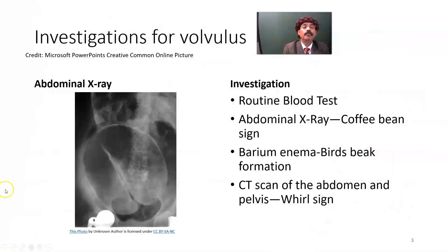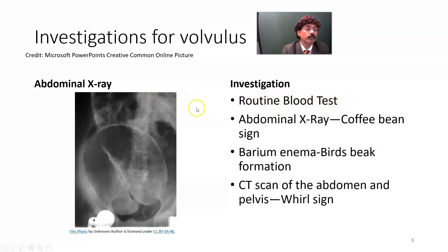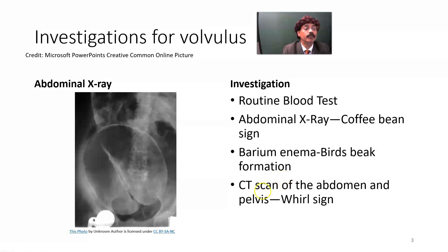What are the investigations for volvulus? Typically we do blood tests, including electrolyte levels and serum thyroid function test as a routine. But most important are the imaging studies: abdominal X-ray, where we will get a huge coffee bean appearance; barium enema, which shows bird's beak formation; and CT scan of the abdomen and pelvis, which shows the whirl sign.